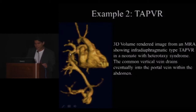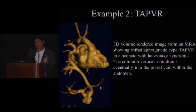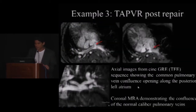In this example, the anomalous venous connection — the vertical vein — extends below the level of the diaphragm and opens into the portal vein. Additional questions the MR angiogram helps answer include the hepatic venous anatomy, bilaterality of the SVC, and the pulmonary veins themselves.